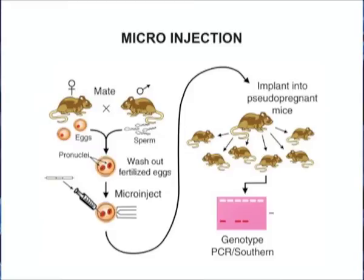Usually 3 to 6 percent of the progeny developed by microinjection are transgenic. The progeny developed from fertilized ova which have integrated the transgene into their genome are the transgenic progeny. The technique has been tried with fish, sheep, and pigs also. The transgenic animals thus developed contain the gene of interest in the germ cells, which is further passed on to the progeny. The integration of foreign DNA occurs at random sites, and the number of copies integrating may differ in different embryos, ranging from 1 to several hundred.